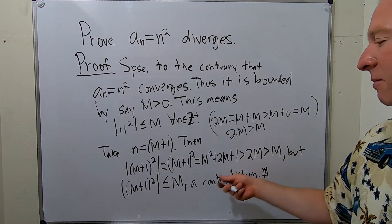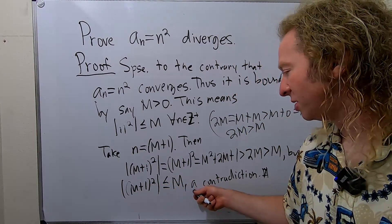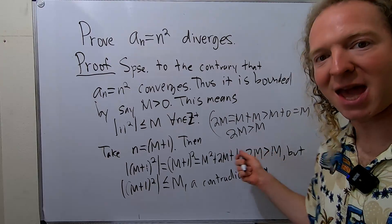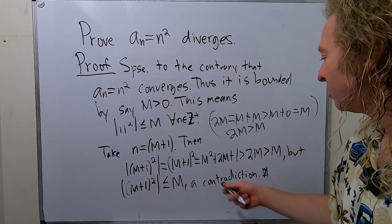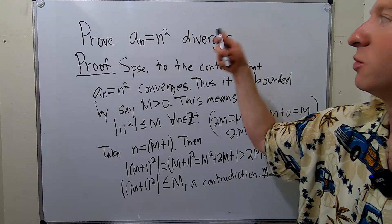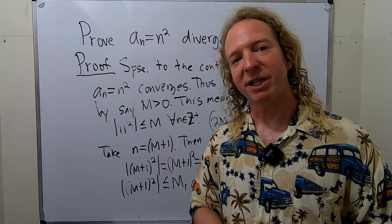So I got that 2M is bigger than M, which gave me that (M+1)² is bigger than M. At the same time, this is less than or equal to M. So it's bigger than M and less than or equal to M. That doesn't make sense. That's impossible, it's a contradiction. Therefore, the sequence must diverge. I hope this video has been helpful. Take care.